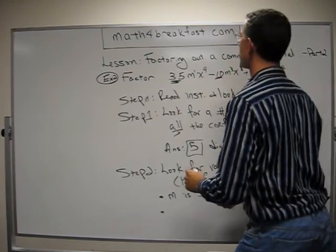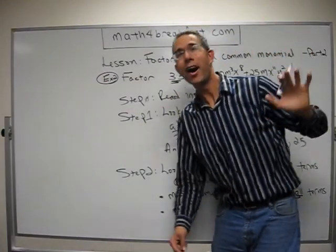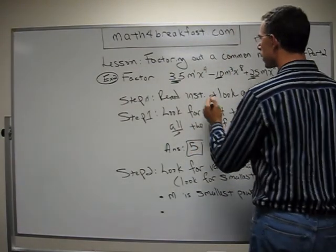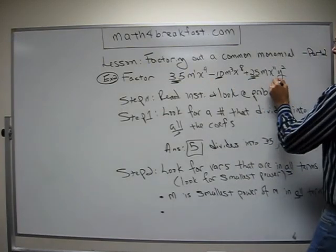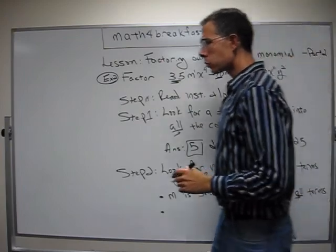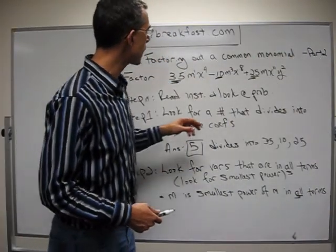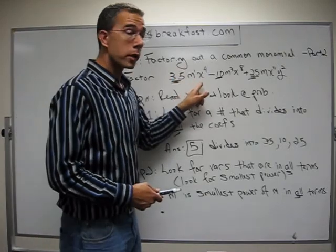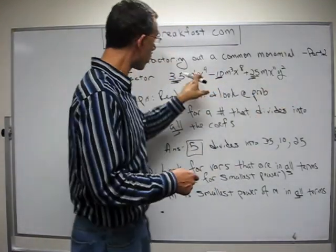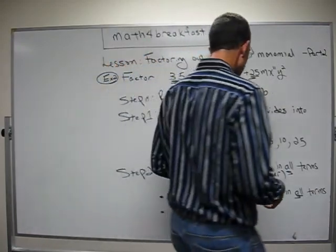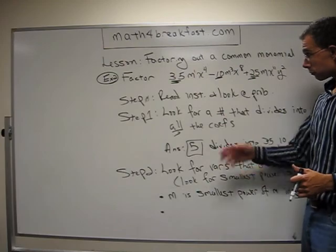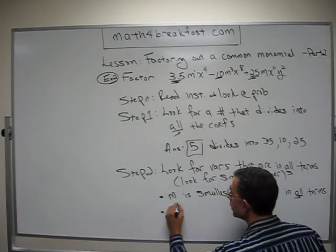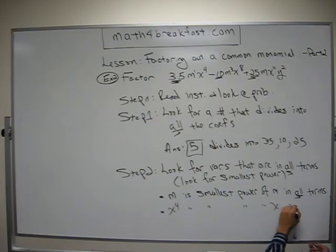Moving on. What else is common? I see an X. X is here, X is here, X is here. All three terms have X. What's the smallest power? This is when you go back to basic arithmetic and you say this is 4, this is an 8, and this is an 11. Those are the powers of my X's. 4 is smaller than 8, and 8 is smaller than 11. 4 must be it. Don't make it more complicated than it needs to be. Smallest power means the smallest exponent, and that's 4. So X to the 4th is the smallest power of X in all terms.